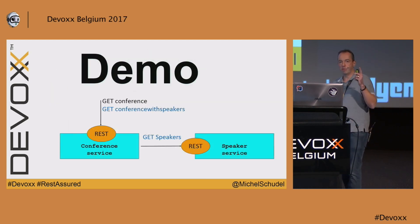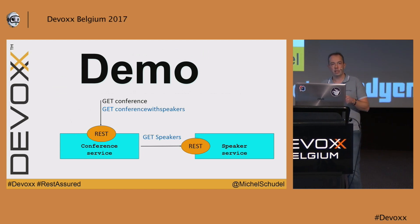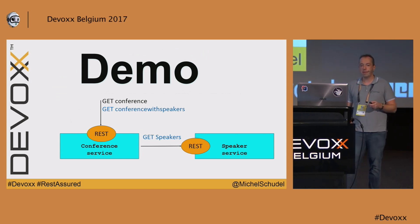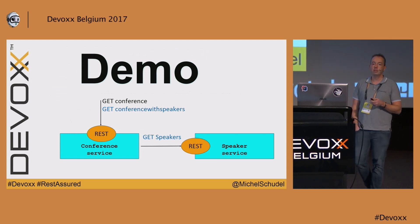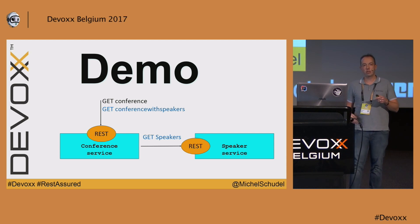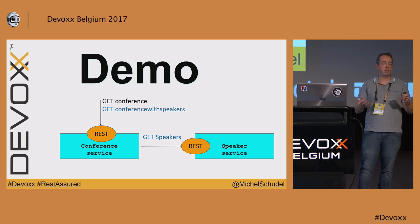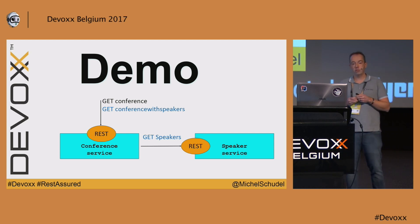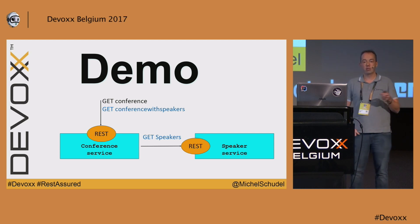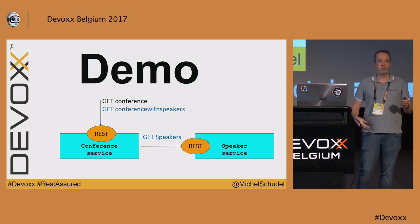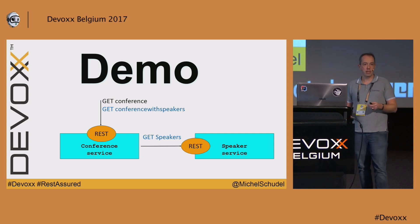All checks you want to do on a response go in that part. Now I'm going to skip into the demo. I have two services: one is a conference service which spits out a list of conferences — Devoxx, JFall, GvNcon and so on. You can access it with GET /conference and it will spit out a conference — a very simple CRUD-like microservice.